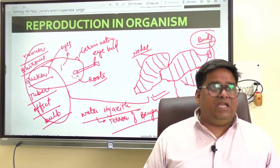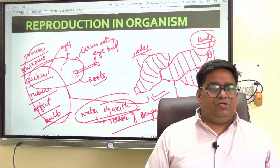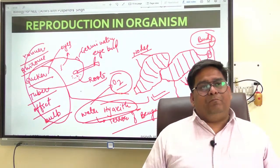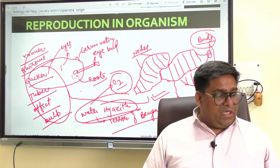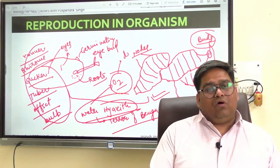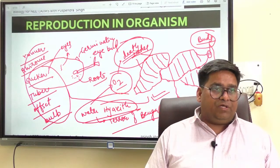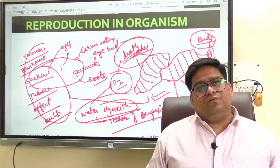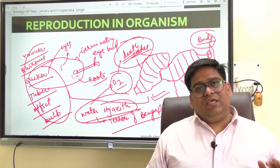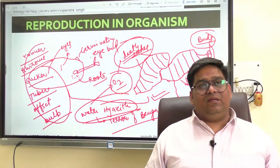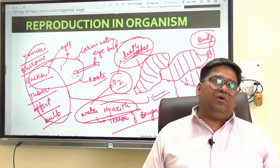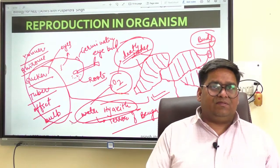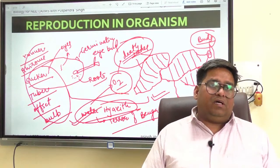The water hyacinth is also called the terror of Bengal, which basically flourishes so fast on the surface of water, wherever it finds standing water. It basically drains out the oxygen from the water, creating a hypoxia-type situation, which may ultimately lead to the death of species in the water. The plant was introduced in India because of its beautiful flowers and the shapes of the leaves. It can propagate vegetatively at a phenomenal rate and spread all over the water body in a short period of time, making it very difficult to get rid of.